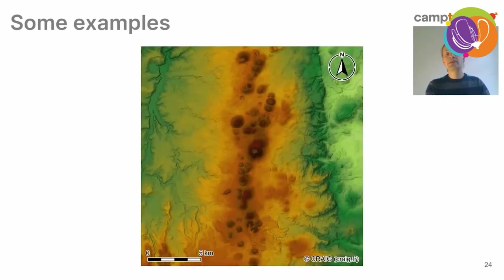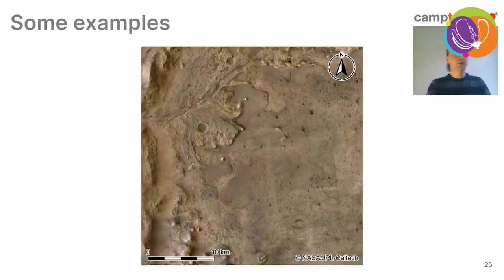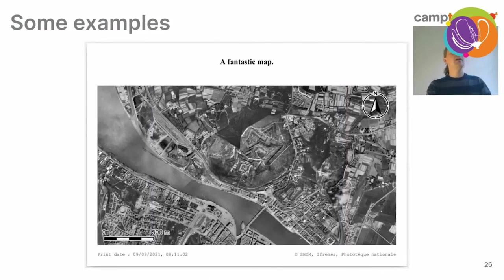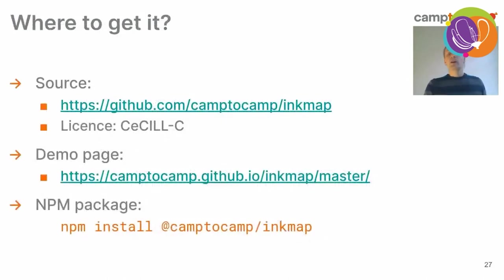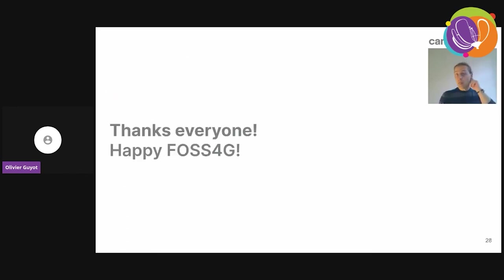There are some examples you can try from the Inkmap demo page — I'll give you the link. These include volcano areas in France, the surface of Mars with the Mars 2020 landing area, and historical WMTS surveys of a town in southwest France. You can find the source at camp2camp.com/inkmap on GitHub. It's open source with a CCLC license. There's a demo page and an NPM package at camp2camp/inkmap. Thank you so much for following this presentation — I hope you had a good time. Have fun, see you later.